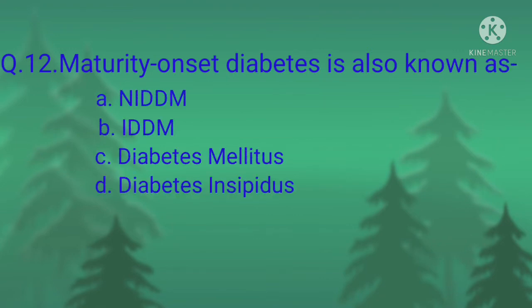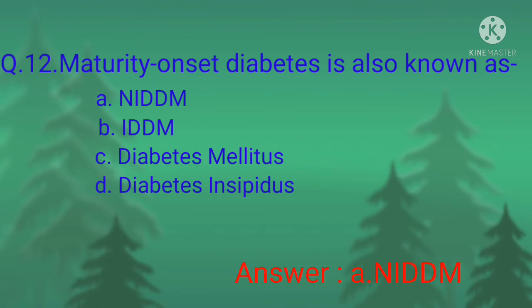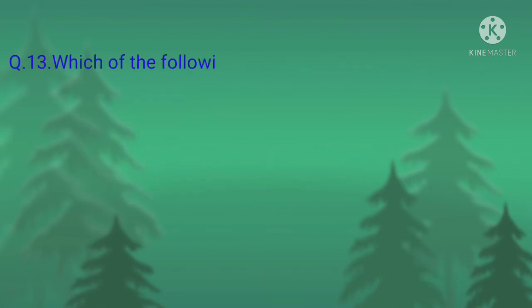Question number twelve: maturity onset diabetes is also known as — option A, NIDDM (non-insulin dependent diabetes mellitus); option B, IDDM (insulin dependent diabetes mellitus); option C, diabetes mellitus; option D, diabetes insipidus. The correct option is option A, NIDDM — non-insulin dependent diabetes mellitus.